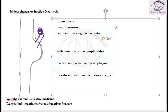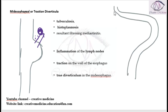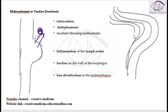Why is it called a true diverticulum? Because it causes outpouching of the mucosa, submucosa, even the muscle layer, and even the serosa. So all layers are outpouched, resulting in a true diverticulum.